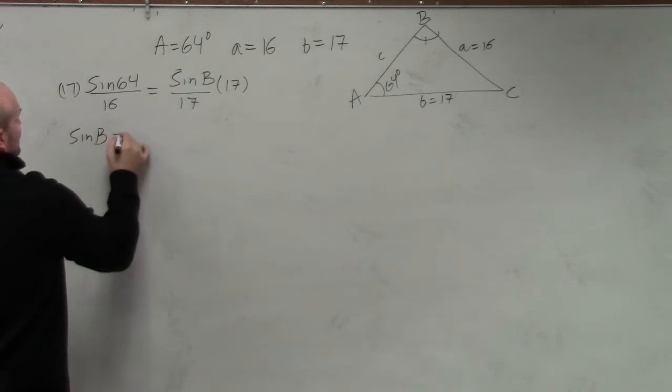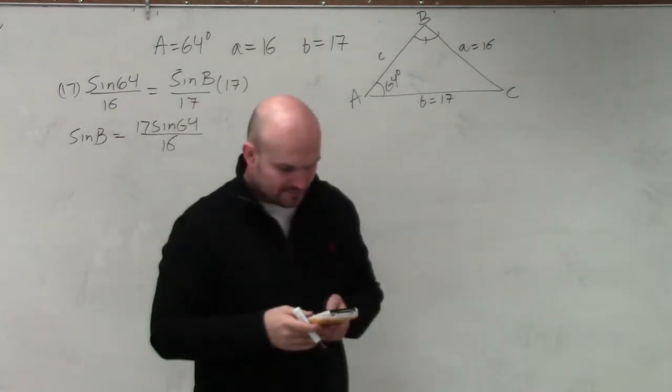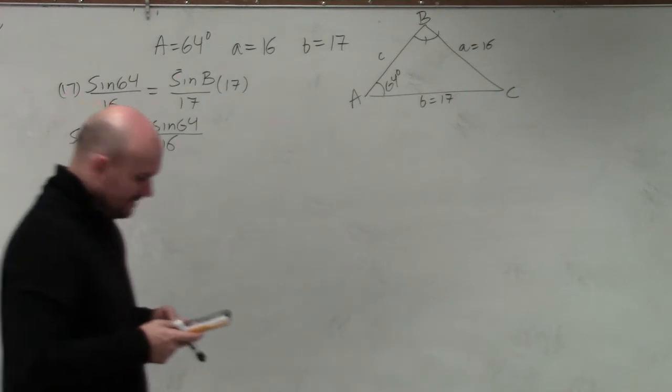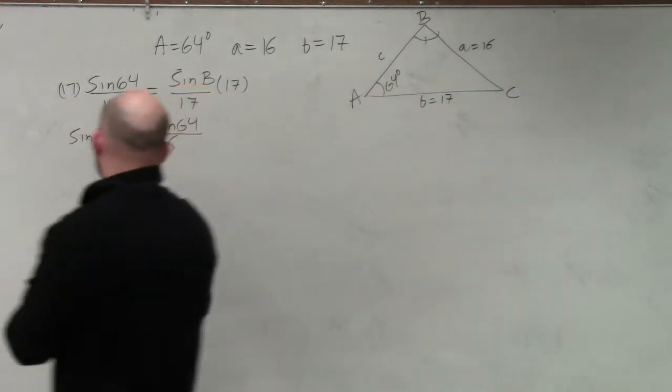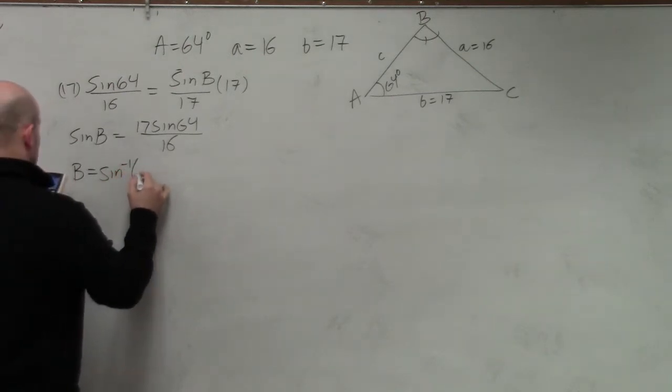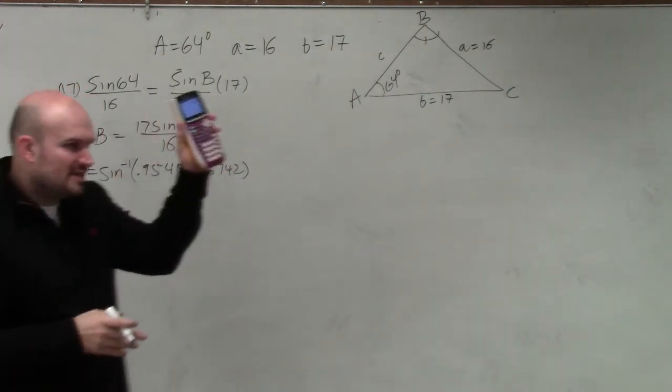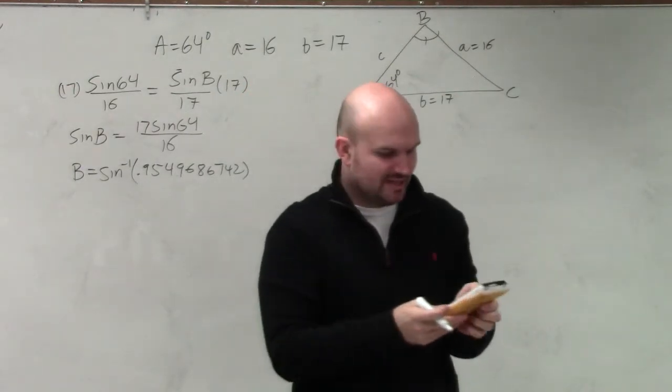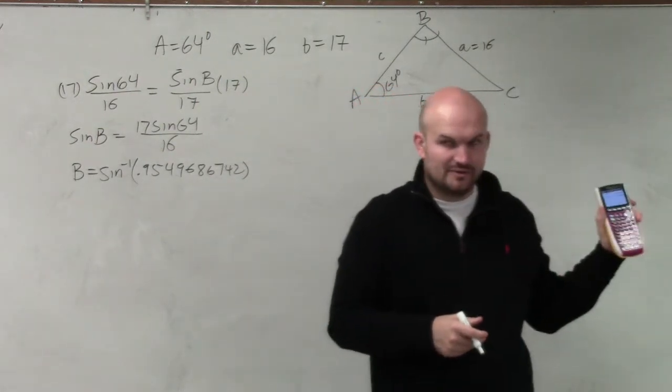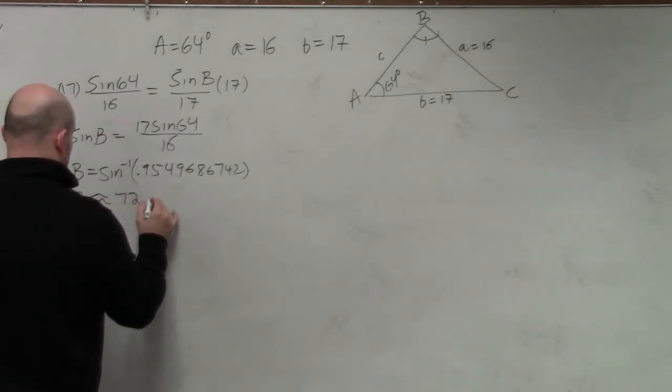And I have sine of B is equal to 17 times the sine of 64 over 16. So now I'm going to type that into my calculator. So I'll do 17 times the sine of 64, end my parenthesis, and then divide that by 16. But that's what sine of B is equal to. I don't want sine of B. I need to figure out what B is. So I use sine inverse of that whole value. Now, fortunately, it's all kept in my calculator. So all I'm going to do is hit second sine, which will give me sine inverse. And then I just hit second answer, and that gives me the answer. Therefore, now B is approximately 72.740.